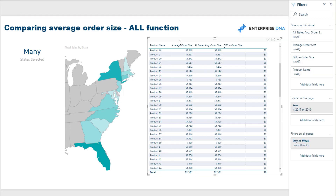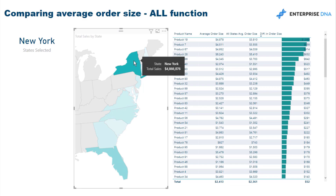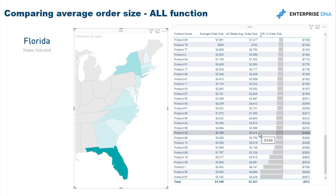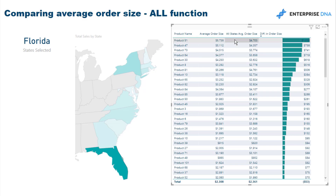This is where the ALL statement comes in. Currently we're looking at every single sale we've made in every single location, but I want to compare one location to the average order size overall. So we can see between any state — for example, if I select New York or Florida — I can look at the difference between the average order size for Florida versus the average order size of everyone overall. You can see here that these products are selling at a much higher average order size than when we look at everything together.